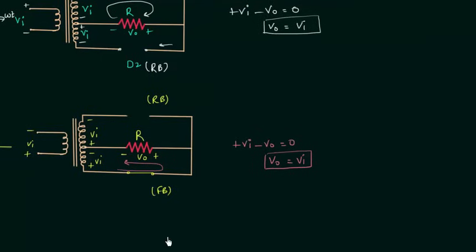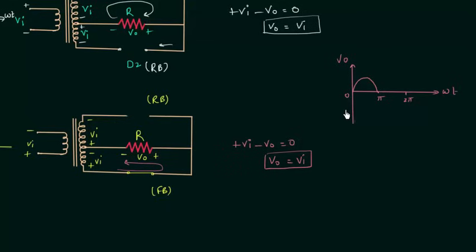I will plot the final output waveform for one time period. The output voltage Vo is identical to the input voltage for the positive half cycle. For the negative half cycle the output voltage is still equal to Vi, and the direction of current remains the same — from right to left. So the polarity of the output voltage remains the same in both cases, giving an identical waveform for the negative half cycle as well. This is the output for the full wave center-tapped rectifier, and it is similar to the full wave bridge rectifier.